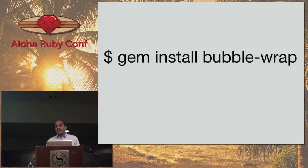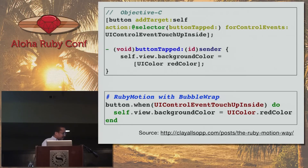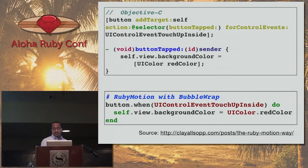BubbleWrap — I mentioned it earlier. The creator of BubbleWrap, Matt Imonetti, is here at the conference. BubbleWrap is a gem that makes RubyMotion code or iOS code look more Ruby-like. Here's an example in Objective-C compared to the same thing in RubyMotion. If you want to dig into more details, take a look at Clay Allsop's blog — he's now contributing a lot to BubbleWrap and Formotion, doing a lot of work in the RubyMotion world.